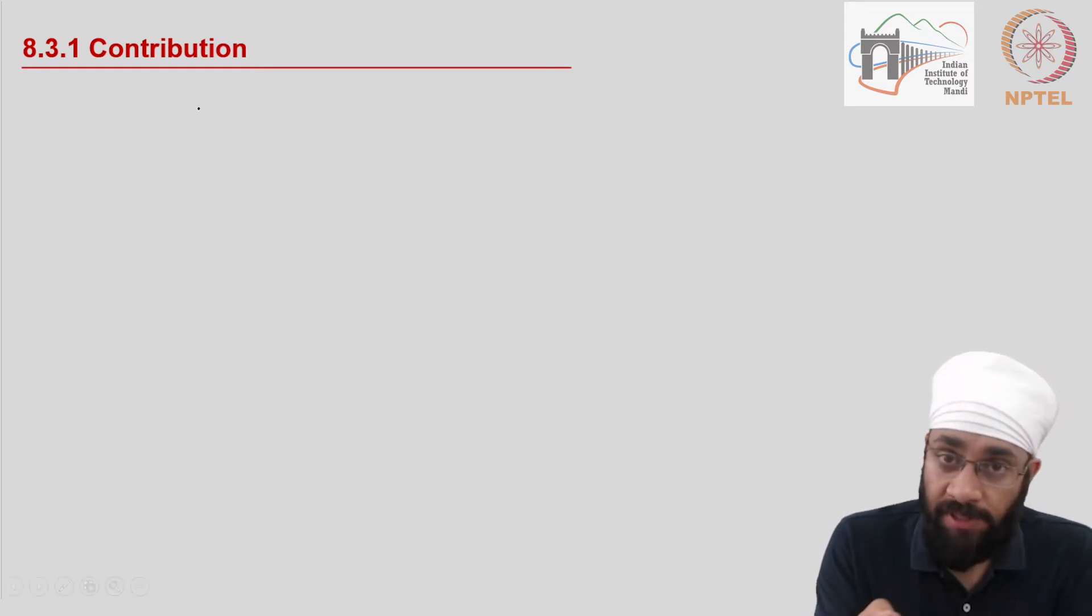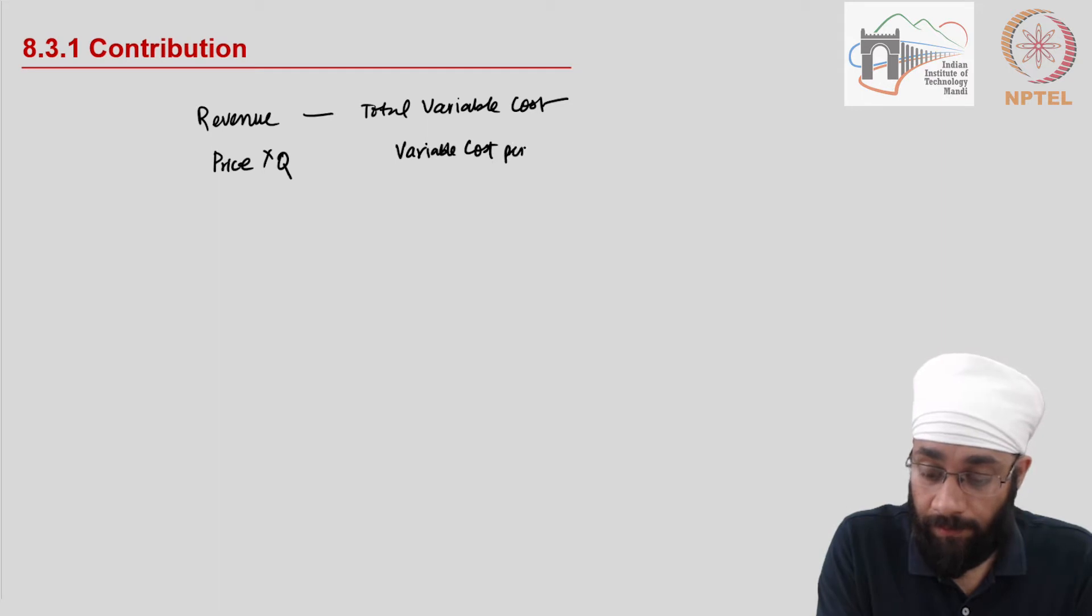So the contribution is basically the difference between the revenue and the total variable cost. The total revenue is made up of the price per unit multiplied by the quantity that you sell, and the total variable cost is the variable cost per unit multiplied by the quantity that you are producing. So this is the contribution, this is the difference between revenue and the total variable cost.